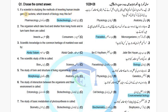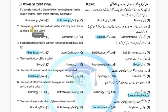If a scientist is studying the method of inserting a human insulin gene in bacteria, which branch of biology may this be? The answer is Biotechnology. Next, the organism which takes food and shelter from the host and in turn harms them is called a Parasite.